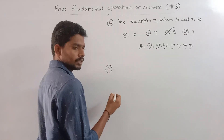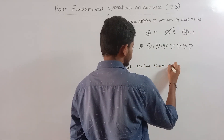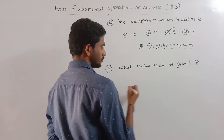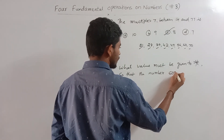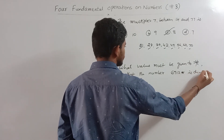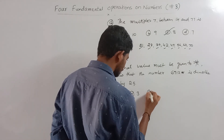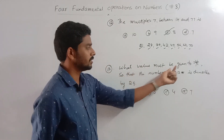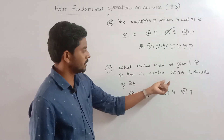Question 13: what value must be given to star so that the number 6912★ is divisible by 25? The options are 3, 5, 4, 7, 5, 4, 7. For a number to be divisible by 25, the last two digits must form a multiple of 25 — so the star value needs to make 6912★ divisible by 25.